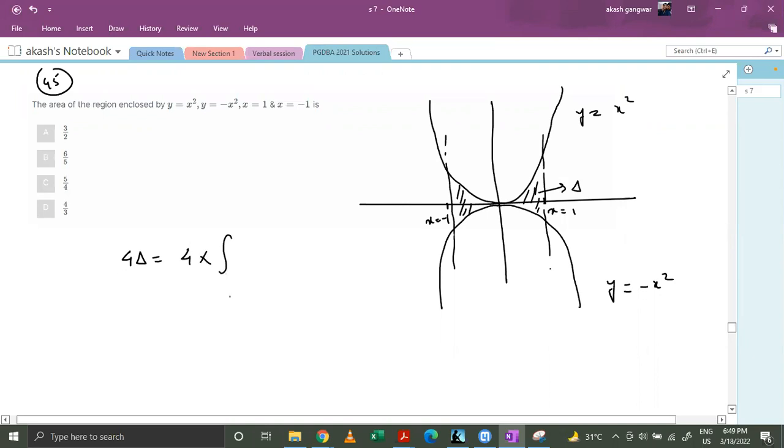Delta is nothing but integral 0 to 1. We are integrating it from x equals 0 to 1, and this function x square minus this function which is minus x square, dx.